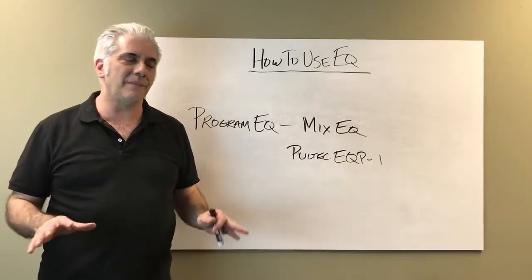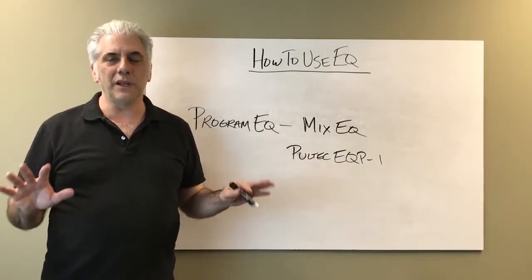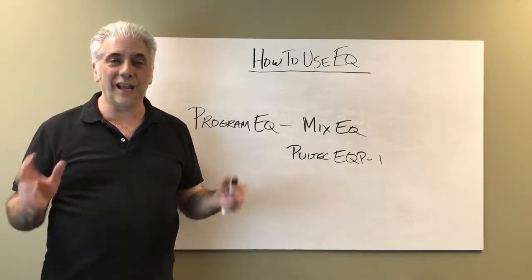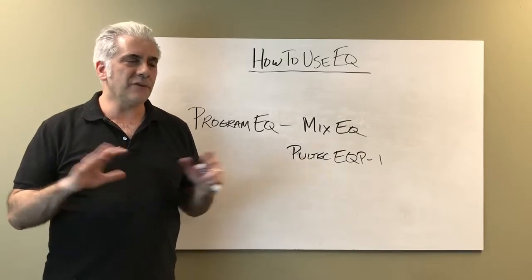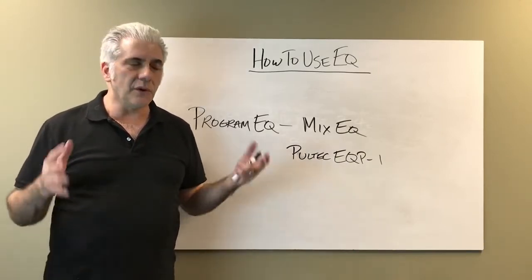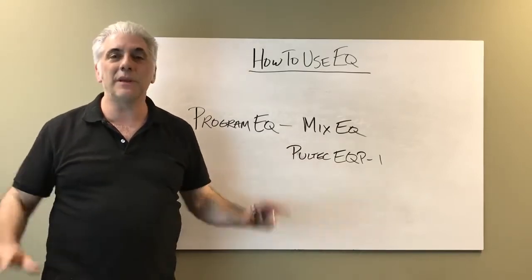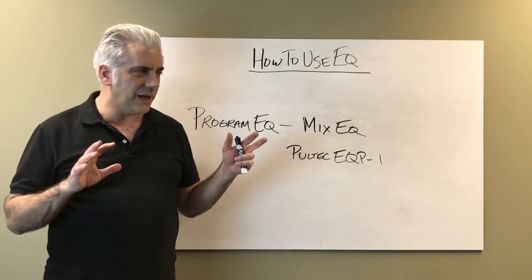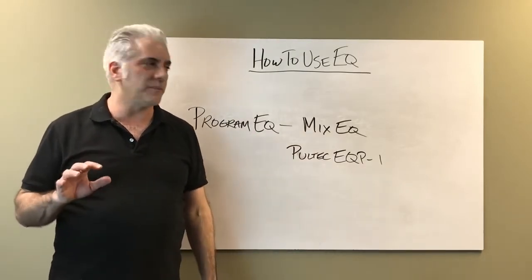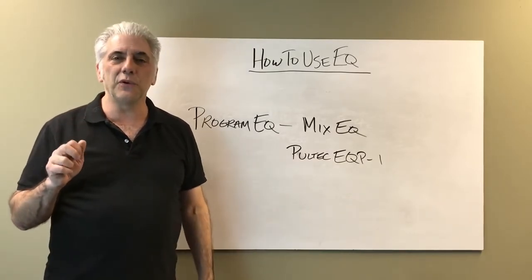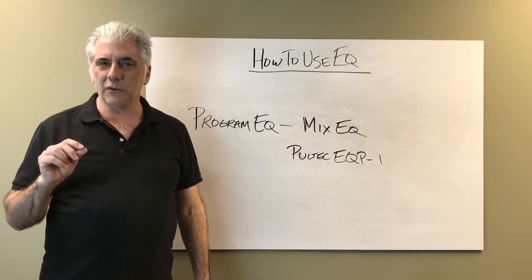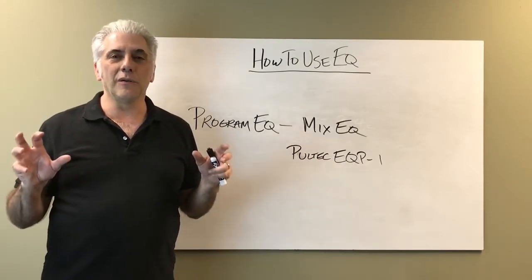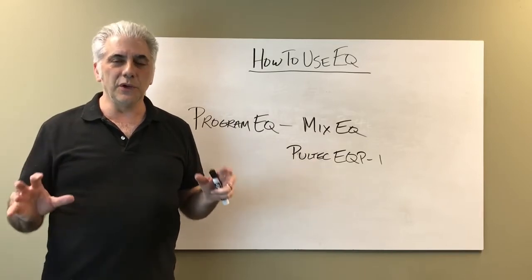With analog instruments — drums, rock guitars — you might go in during mixing and touch up a few areas with a parametric EQ, cutting or boosting where needed. But a program EQ is just a general, broad-stroke EQ used for the entire mix. Nowadays with digital recording, sampled sounds already have tons of bottom end and top end, so you don't need to do as much. It's mainly with live analog recordings that you'll end up making adjustments in the mixing stage.